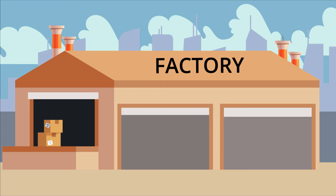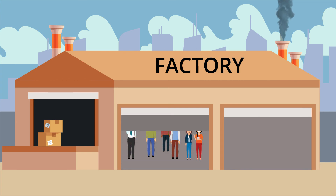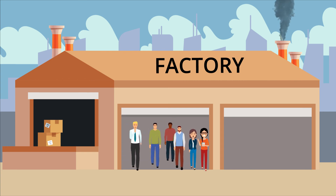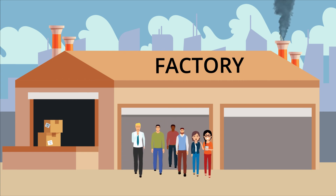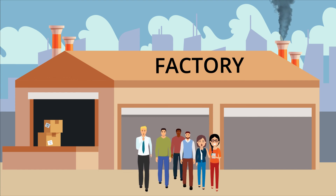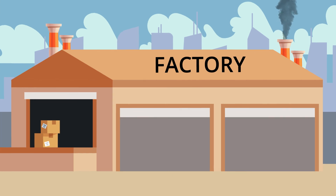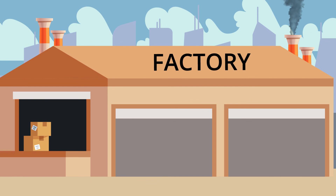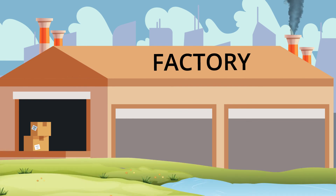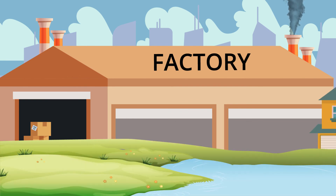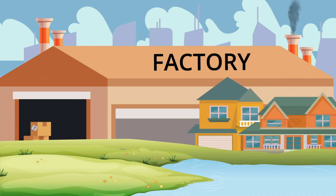When people think about environmentalism, they often think of melting ice caps and polar bears. While those issues are genuine, some issues hit closer to home for many people. Toxic facilities like coal-fired power plants and incinerators emit toxic chemicals into the lungs, soil, and water of nearby communities, as well as emitting carbon dioxide into the atmosphere.